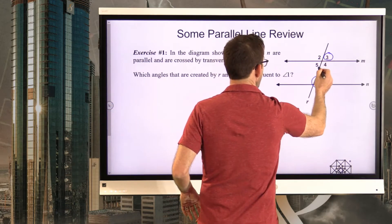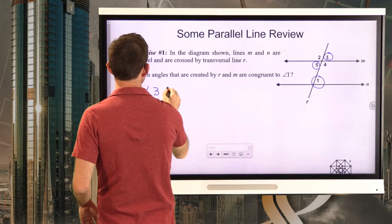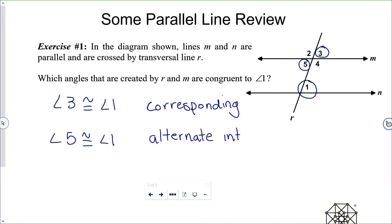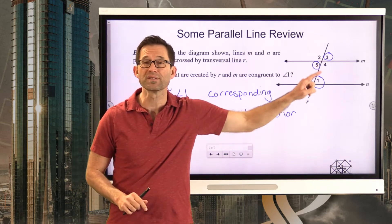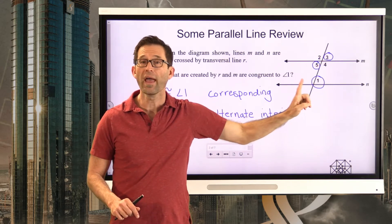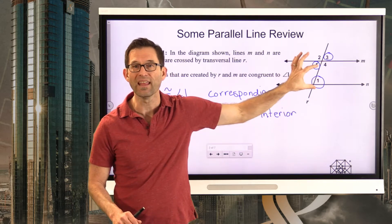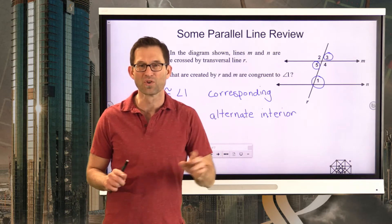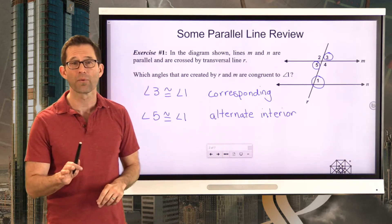Angle three is congruent to angle one, as is angle five. Angle three and angle one are corresponding angles — two angles that show up in the same place on two parallel lines, like the upper right-hand corner. Those are congruent. Angle five and angle one are alternate interior angles — two angles that are on opposite sides of the transversal and inside the parallel lines. A lot of students think of these as the angles formed by a Z. We're going to be watching for both types of angle pairs in the problems we work on today.